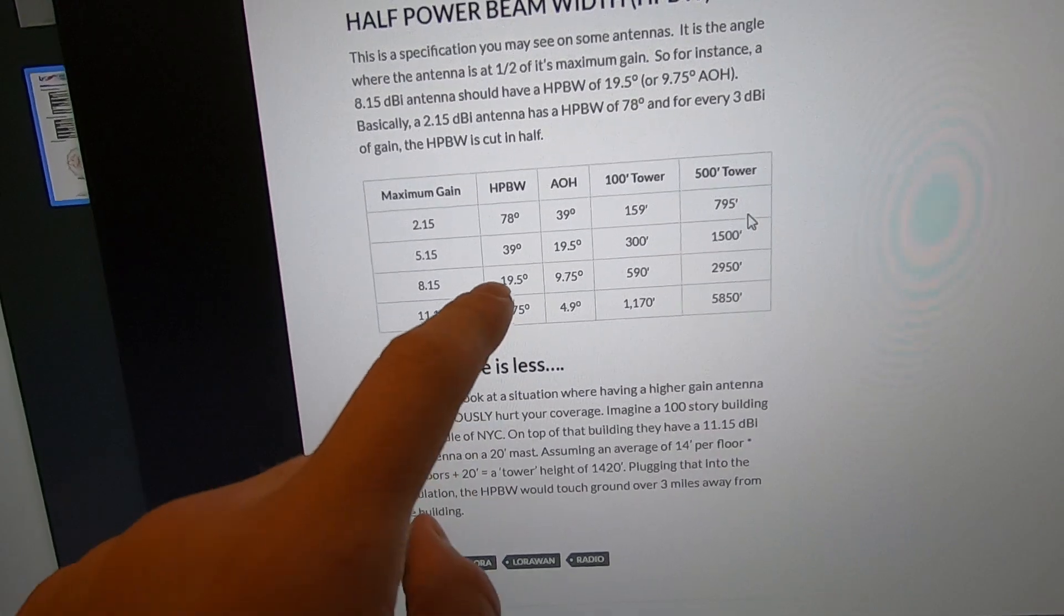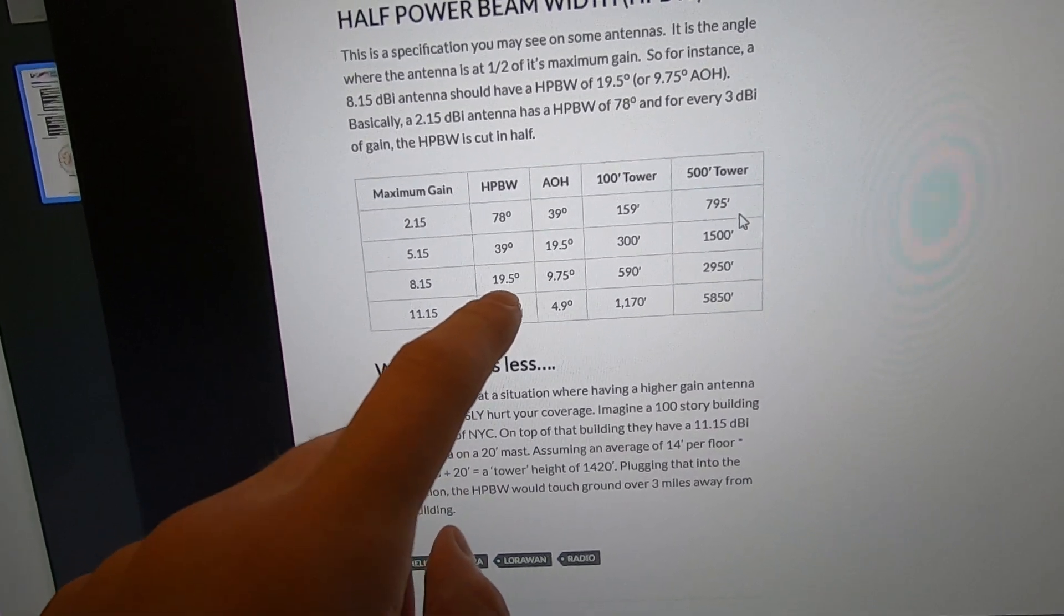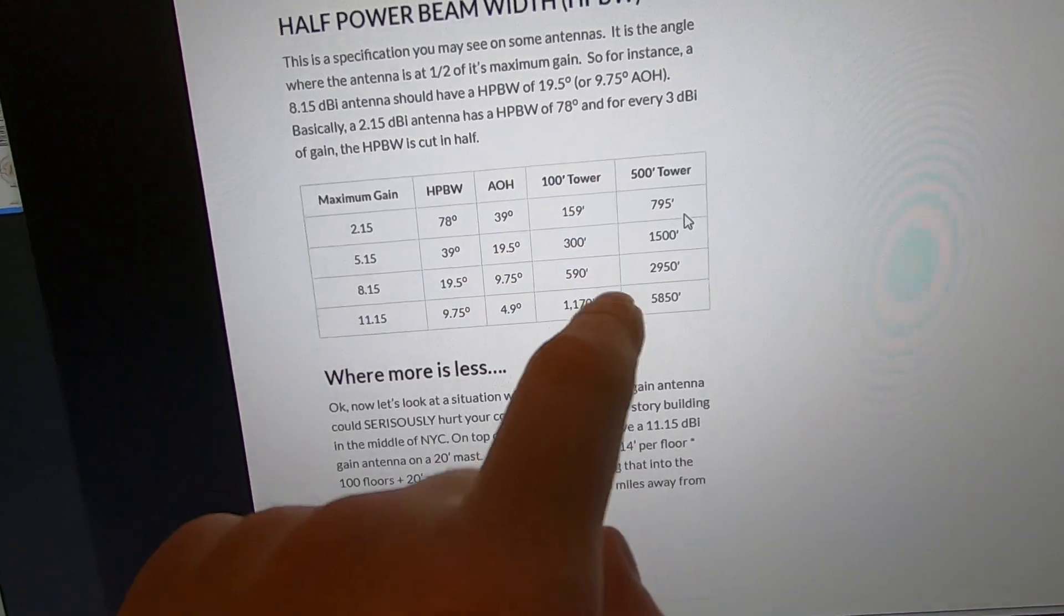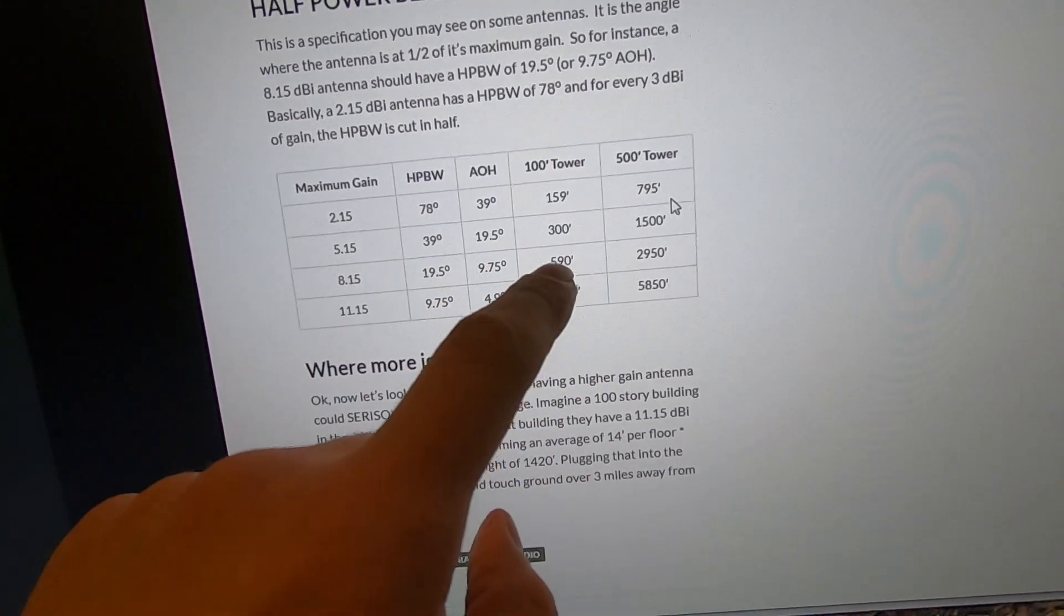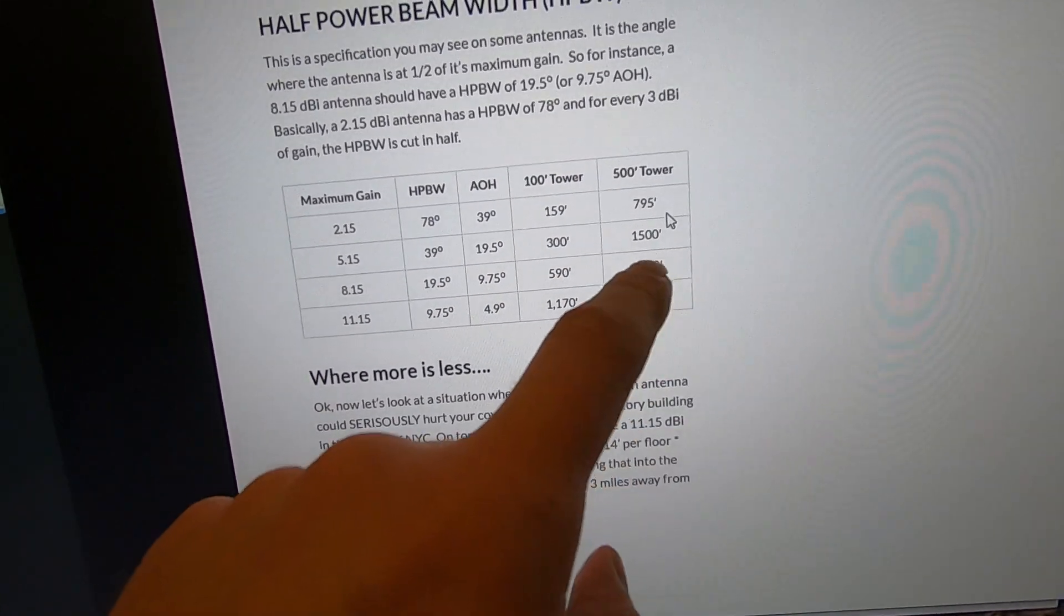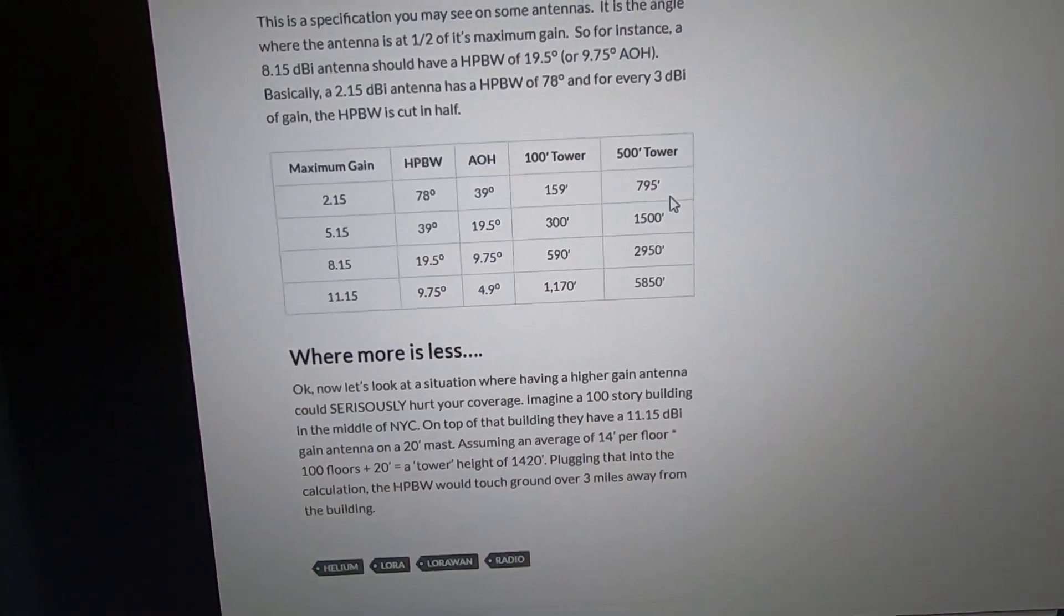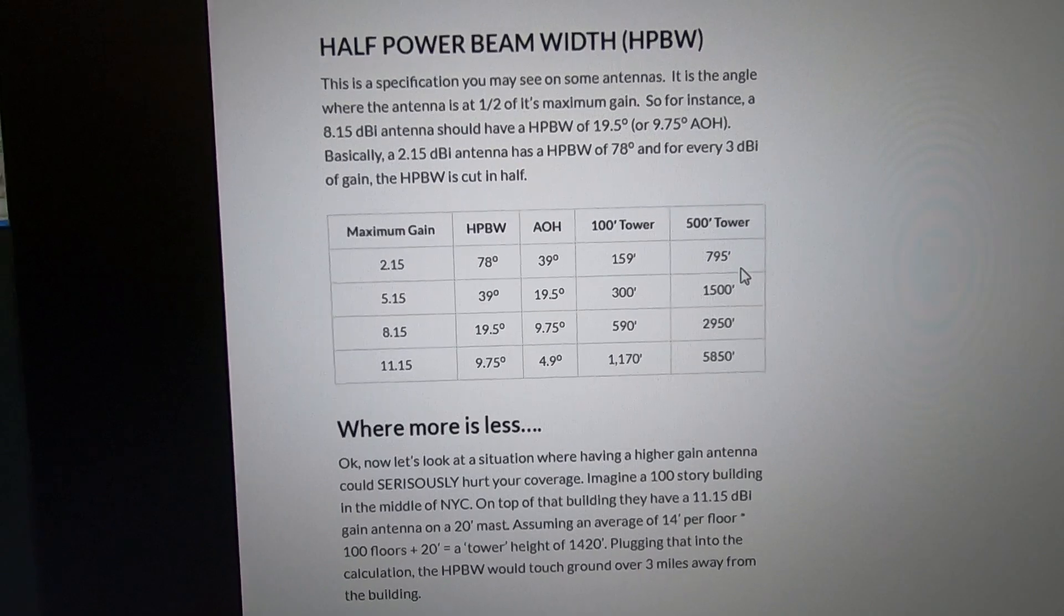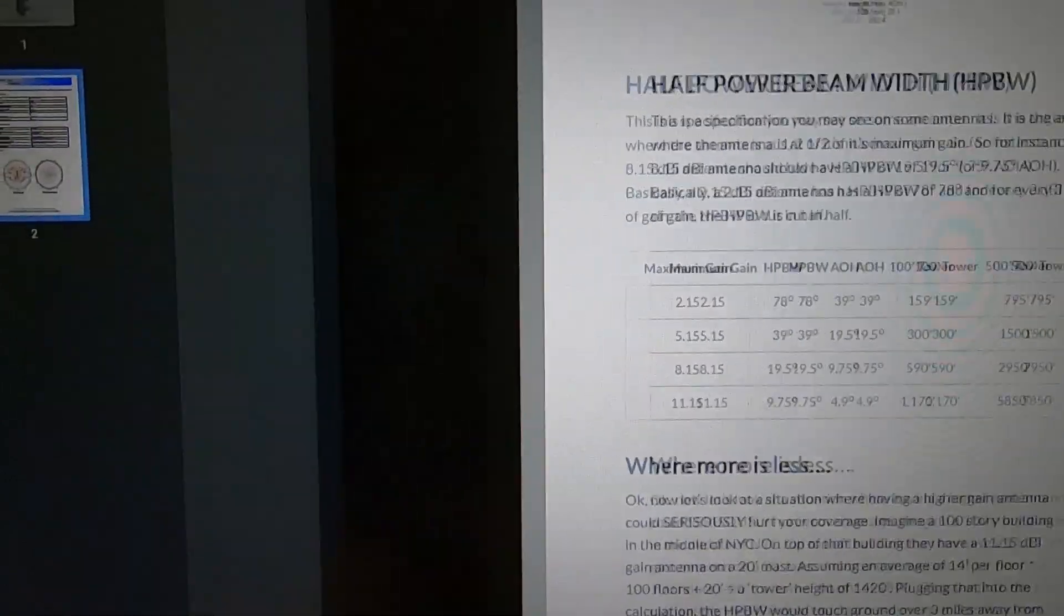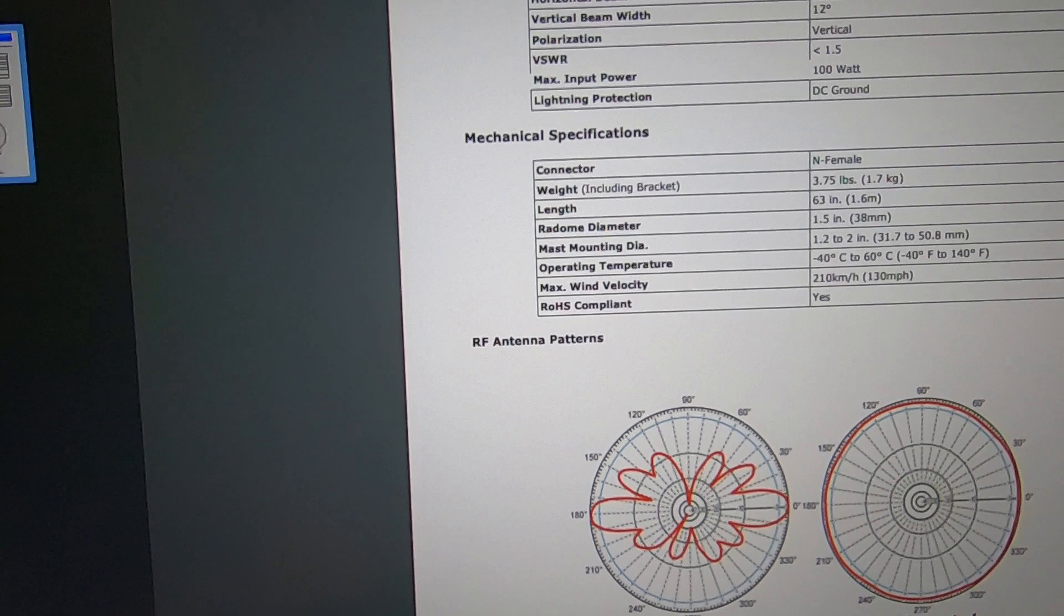If we have an 8 dBi gain antenna with maybe a 20 degree beam width on a 100 foot tower, we're 600 feet out. On a 500 foot tower, we're about 3000 feet out. Now remember, that's where the gain is going to hit the ground in the most gain pattern.